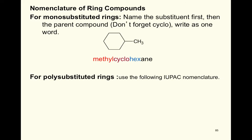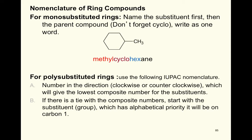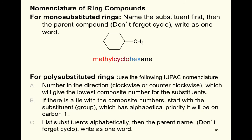For polysubstituted rings, use IUPAC nomenclature. Number clockwise or counterclockwise to give the lowest composite number to substituents. If there is a tie, the substituent with alphabetical priority gets carbon number one. List substituents alphabetically, then the parent name including cyclo, written as one word.